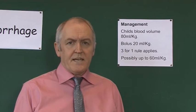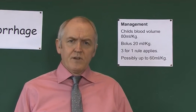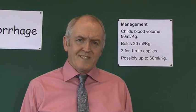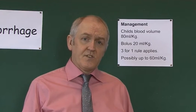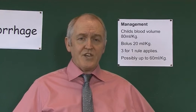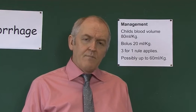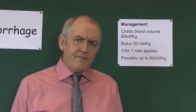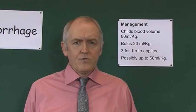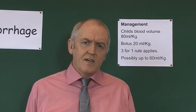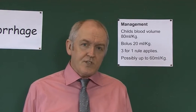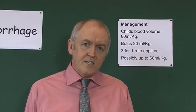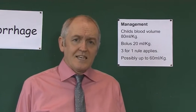Now, the basic principles of management. A child's blood volume is about 80 mls of blood per kilogram of body weight. In an emergency you might not have time to weigh the child, so you could use a length-based chart to calculate an approximate weight. After significant haemorrhage, if the child's tissues are hypoperfused and we're seeing compensatory clinical features, the initial bolus of fluid — which needs to be crystalloid and warmed — could be 20 mls of resuscitation fluid per kilogram of body weight.